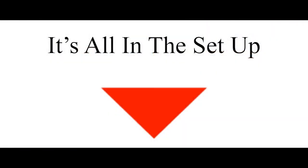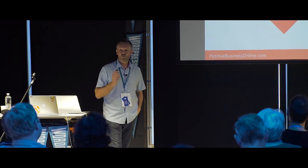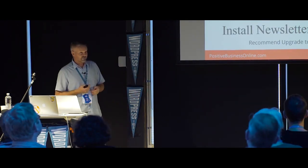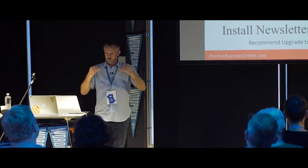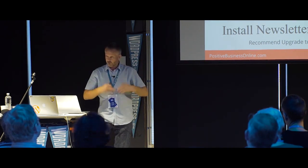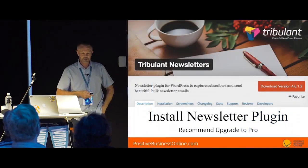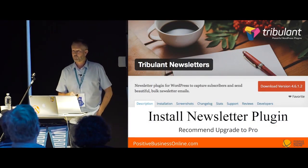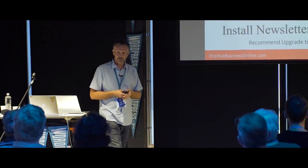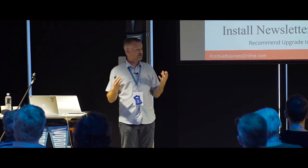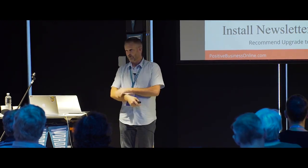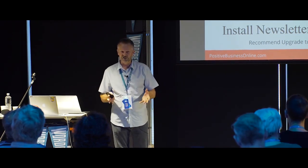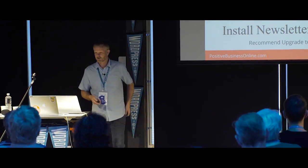It's all in the setup. The WordPress plugins we use: the first is called Tribulant Newsletters, available in the WordPress plugin repository. That's the free version, but there is a pro version I recommend — get it after you've tried it. I think the free version is limited to 100 subscribers. To buy the pro, it's about $50 — not expensive. Install it and configure it.